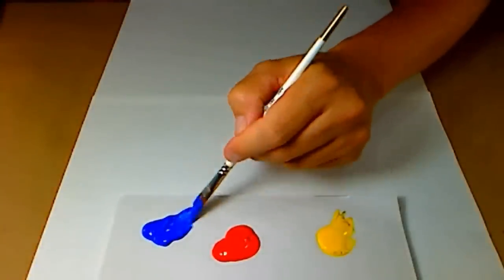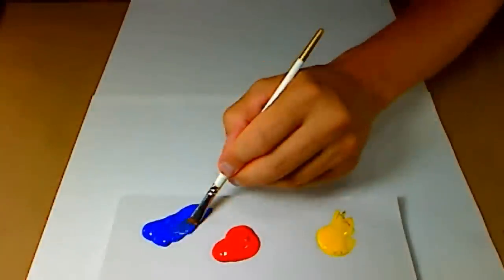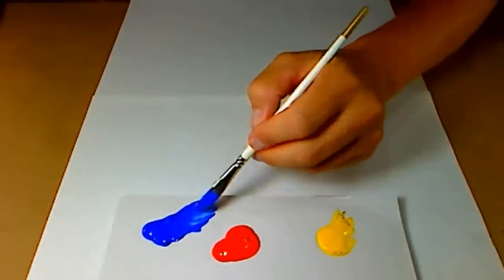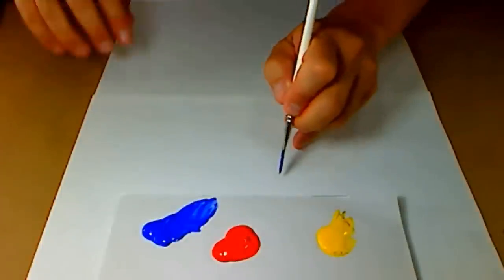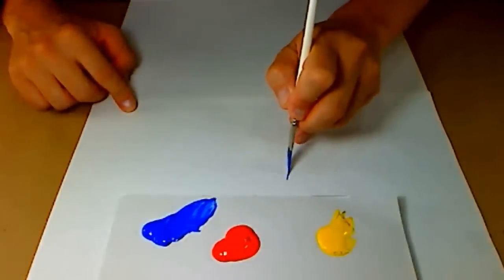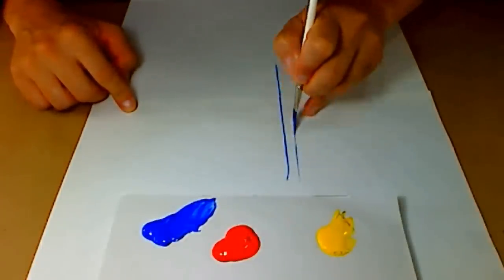You can do real simple strokes when you first start playing around. Thin your color slightly, and you can work on the chisel edge of the brush, straight up and down, to get fine lines.